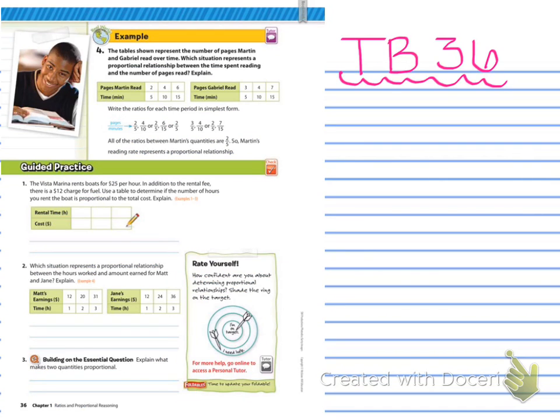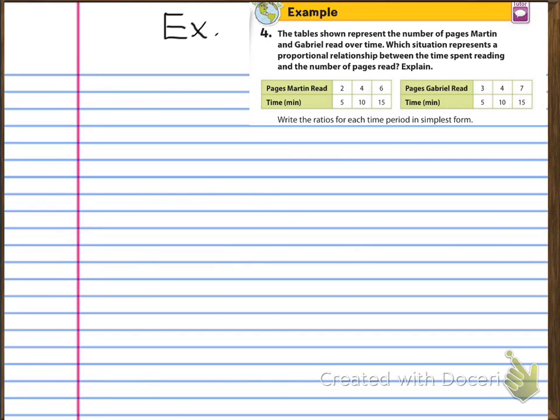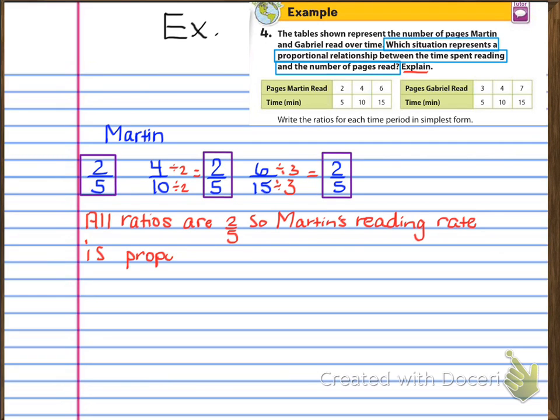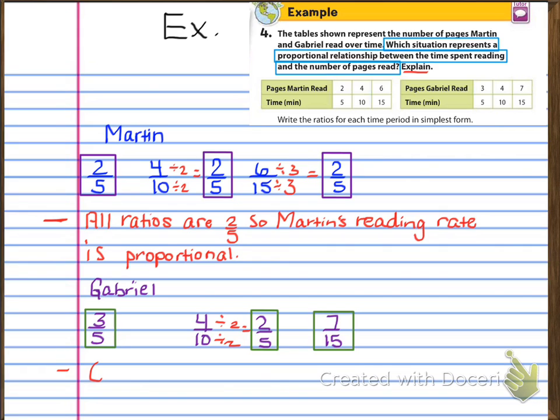All right, so now we're looking at textbook page 36, example 4. It says, The tables shown represent the number of pages Martin and Gabriel read over time. Which situation represents a proportional relationship between the time spent reading and the number of pages read? Explain. So the first thing that you need to do is you need to take each one of the ratios for the time periods and simplify them. As you can see, for Martin's ratios, each one simplifies to 2 to 5. All the ratios are 2 to 5, so Martin's reading rate is proportional. Now when you're looking at Gabriel's, you're going to do the same thing. And as you can see with Gabriel's rates, 3 to 5 is already simplified, 4 to 10 will simplify to 2 to 5, and then 7 to 15 is simplified. So Gabriel's ratios are not the same, so his reading rate is not proportional.